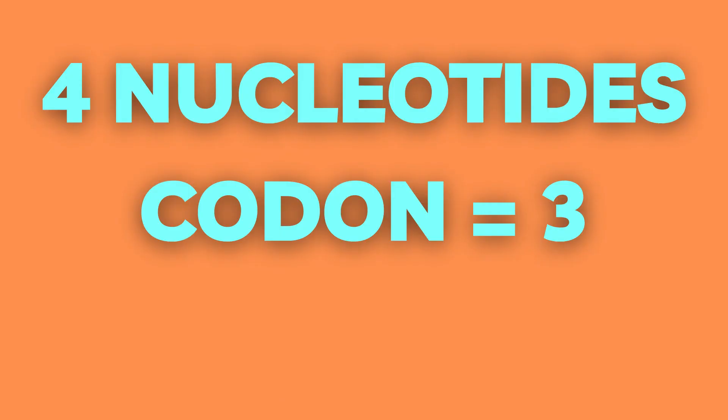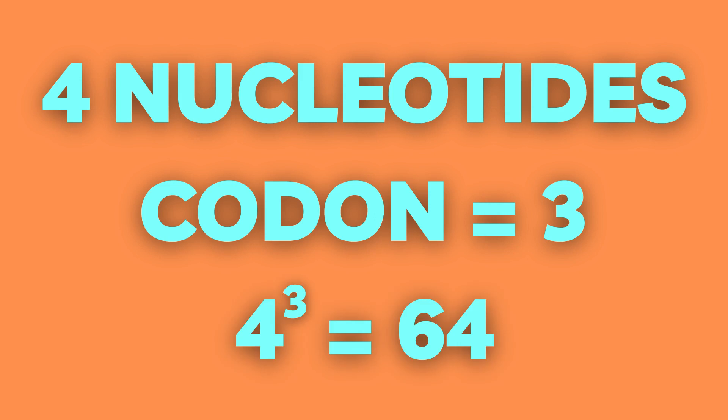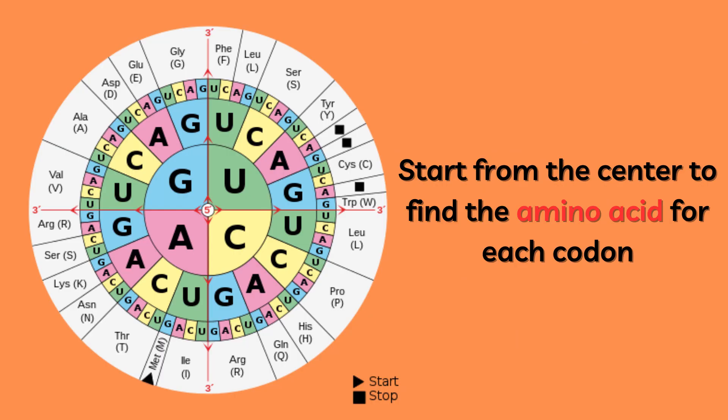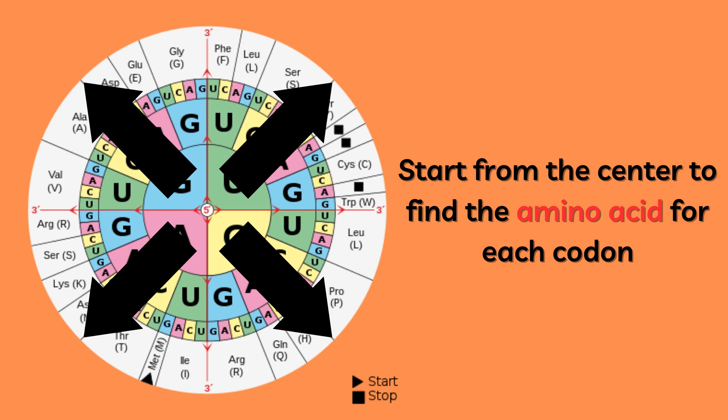As there are four bases and each codon has three letters, we can take four to the power of three to get the total number of possible combinations, which is 64. Now as there are only a total of 20 amino acids, this is more than enough. A codon table such as the one shown on the screen can be used to interpret what amino acid the mRNA will code for. It is read from the center outwards.